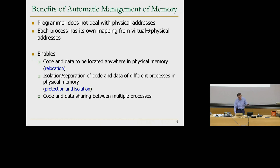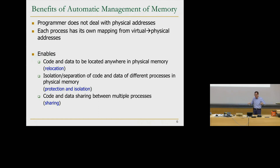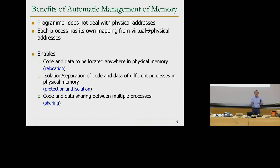This also enables code and data sharing between multiple processes. If processes need to share data, different virtual addresses in different programs can be mapped to the same physical location. It's the data that matters, not the name. As long as you map the names of different processes to the same data, you don't have a problem. The programmer doesn't get exposed to physical addresses directly — the programmer uses virtual addresses, and the system maps those to physical memory, enabling all of this.